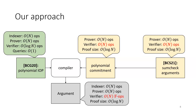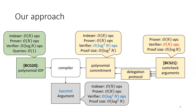Unfortunately, the polynomial commitment scheme has a linear-time verifier, O(N). This is inherited from those BCS21 sum-check arguments, and is also inherited by the argument that comes out of the compiler — which is just not good enough. So to improve things, we actually improve the polynomial commitment scheme using a delegation protocol with even more sum-check arguments from BCS21.